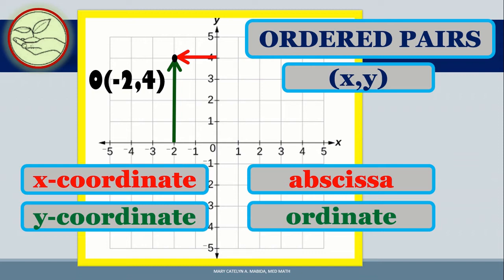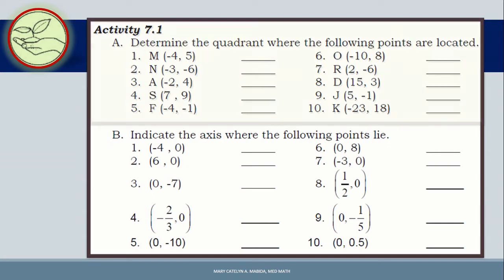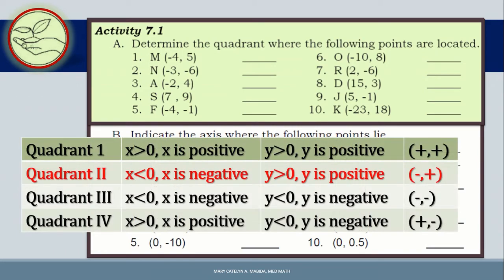Again, you can pause and replay this video as needed. Now let us test our new knowledge. Get a separate sheet of paper and a pen to answer Activity 7.1. Activity 7.1 has two parts. Part A: determine the quadrant where the following points are located. You have 10 numbers to answer. Let's take number 1: M with coordinates (−4, 5). Pulling up our guide — negative 4 and 5, that is negative, positive. And so, M belongs to quadrant 2.